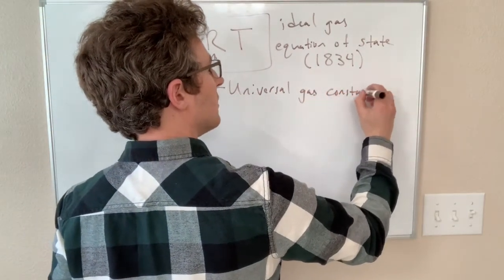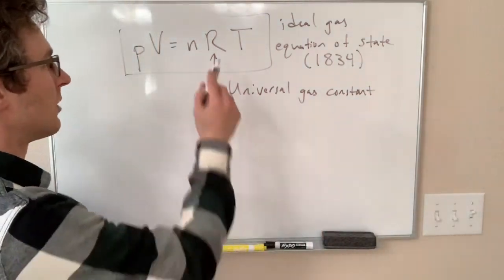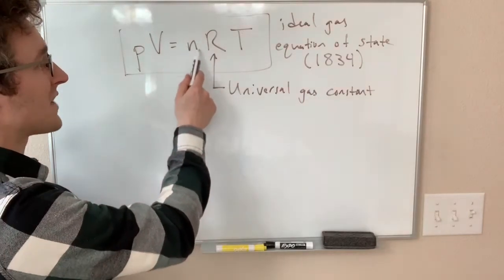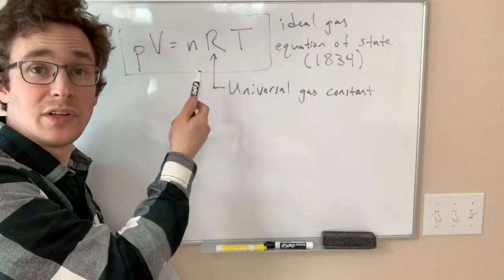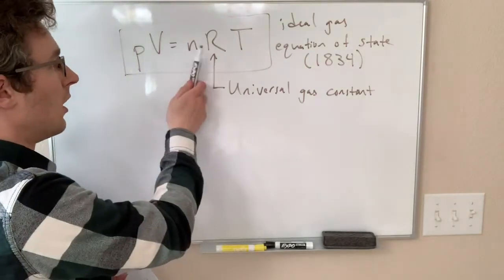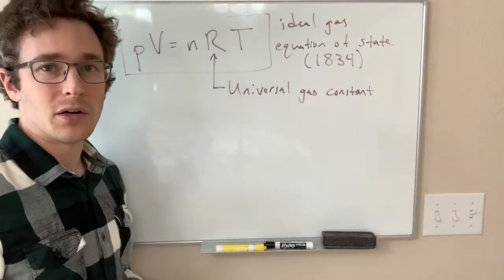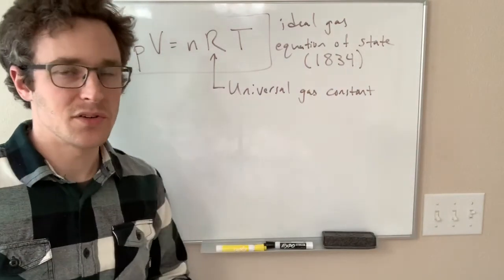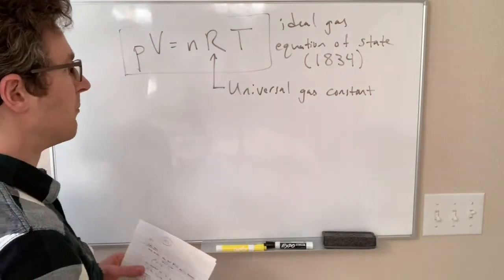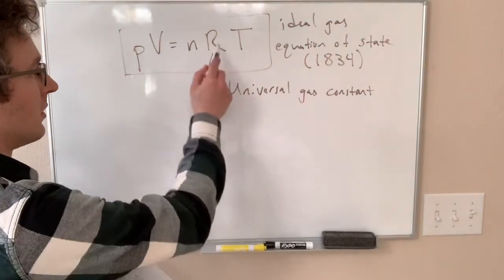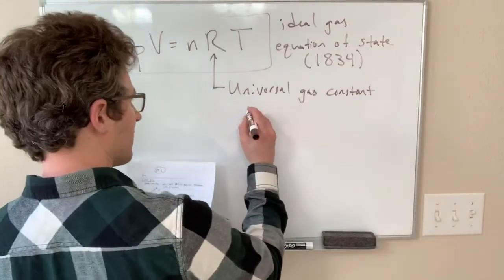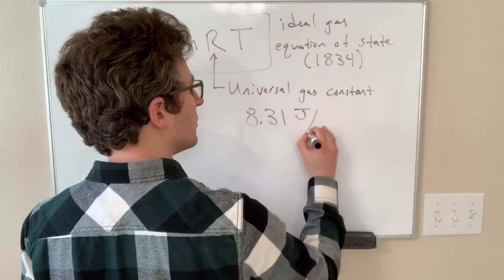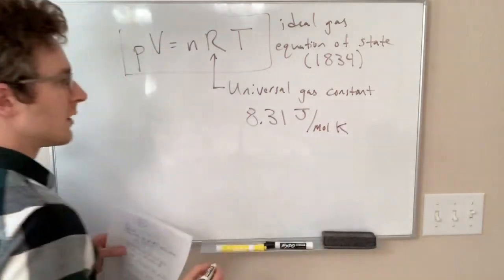The reason this is the universal gas constant is because you can also write this equation such that instead of the number of moles, you have the mass of your system, which is very convenient if you're doing calculations for actual systems. But then the trade-off is your value of R depends on what stuff you're talking about, so then you have a different gas constant for air versus nitrogen versus argon. The universal gas constant, in terms of moles, has the following value, 8.31 joules per mole kelvin.